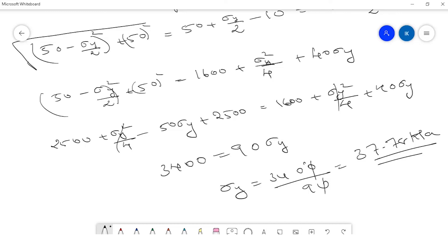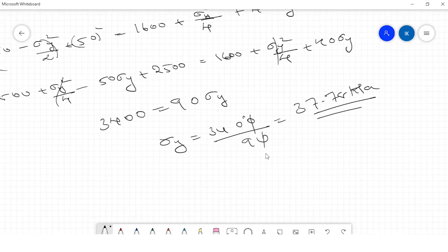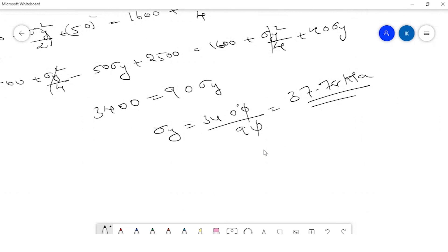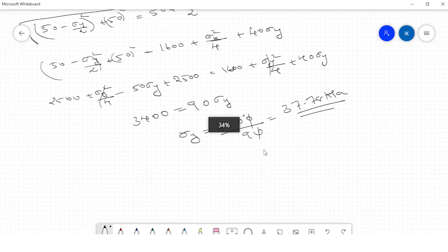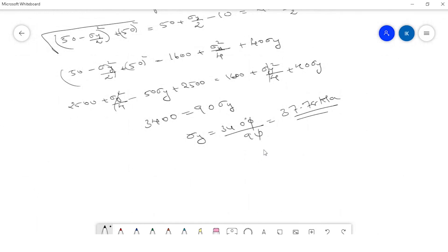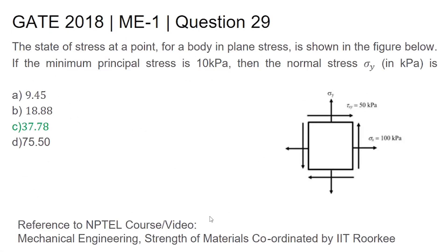Therefore, for this question, the answer is σy = 37.78 kPa. For this question — the state of stress at a point for a body in plane stress shown in the figure, with minimum principal stress 10 kPa — the normal stress σy is 37.78 kPa, which is option c. Option a (9.45) cannot be the answer as it is less than 10. For more reference, you can refer to the NPTEL course Mechanical Engineering Strength of Materials coordinated by IIT Roorkee. Thank you.